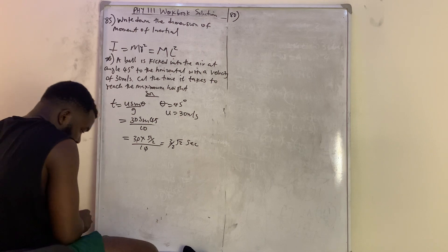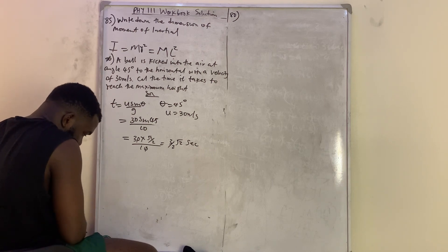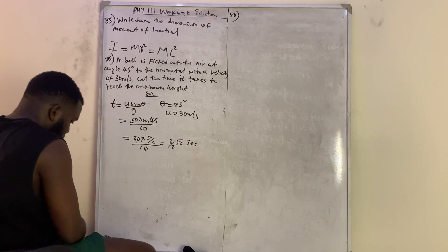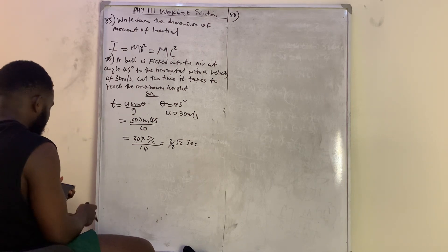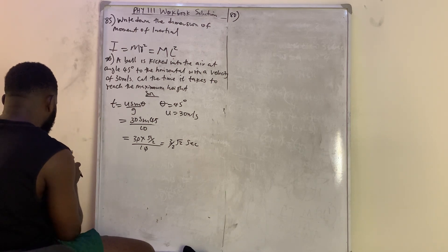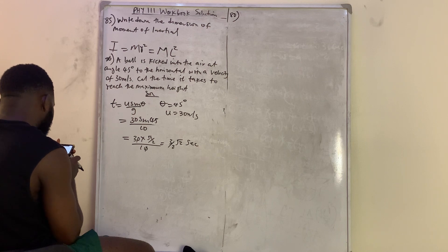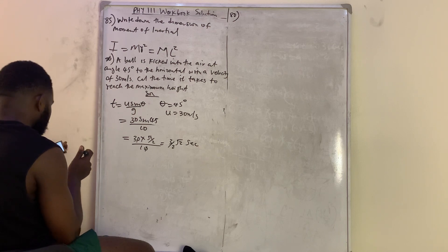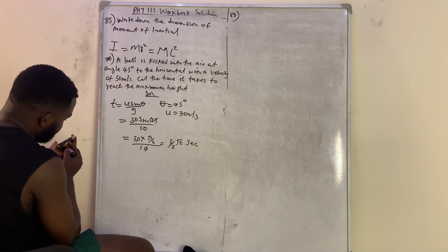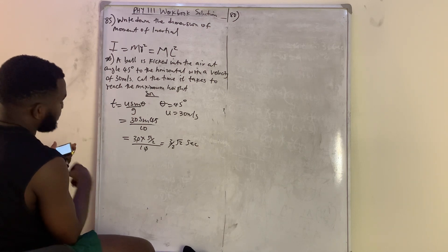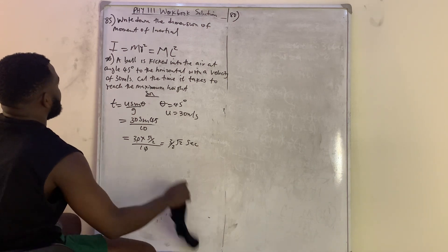Question number 87: the inverse of the time taken to complete one circle of oscillation in simple harmonic motion is called the frequency.